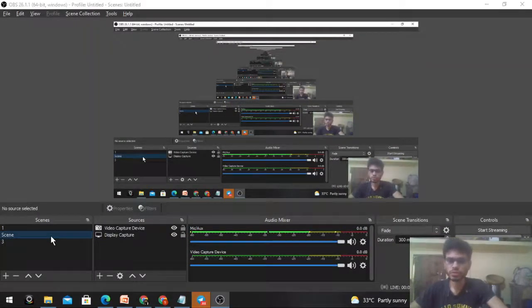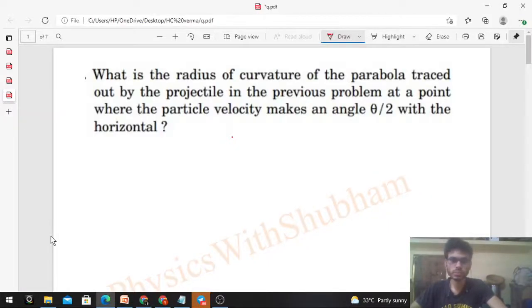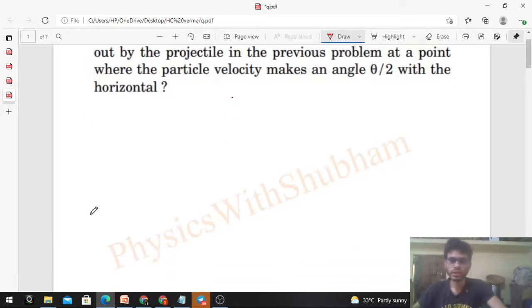Okay, hi everyone. Today let's discuss this interesting problem. What is the radius of curvature of the parabola traced out by the projectile in the previous problem at a point where the particle velocity makes an angle θ/2 with the horizontal?